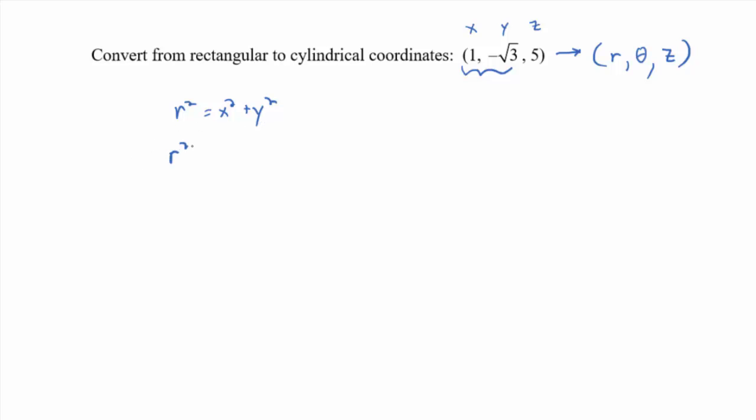So okay, so r squared is going to be what? One squared plus negative root 3 squared, which is 3, right? Or 4, which means r is, we're not going negative here, so 2. r is 2.